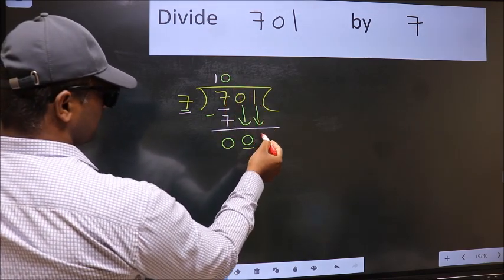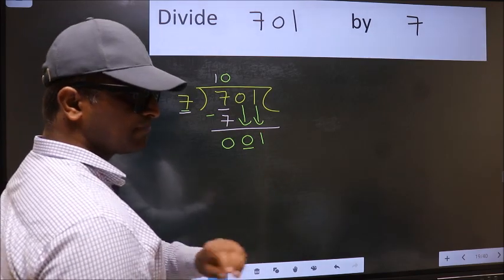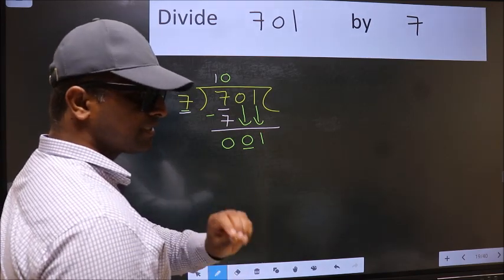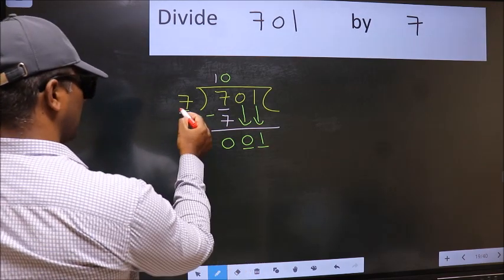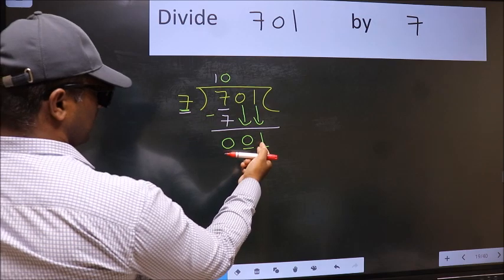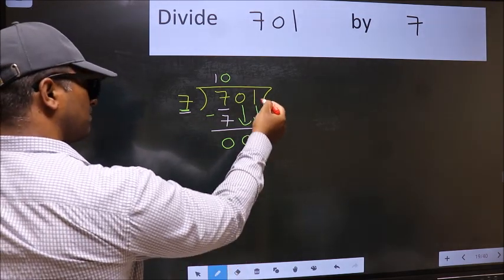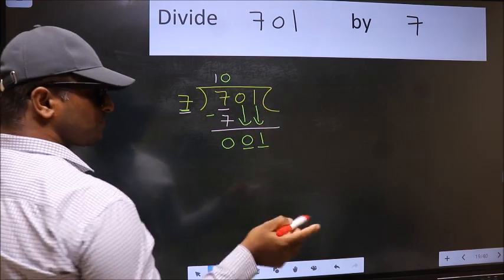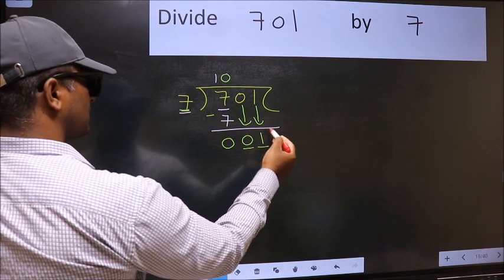Then only we can bring this number down. After this step, the mistake happens. And the mistake is this: here we have 1 and here 7. 1 is smaller than 7. And we don't have any more numbers to bring it down. So, what many do is they directly put dot, take 0.